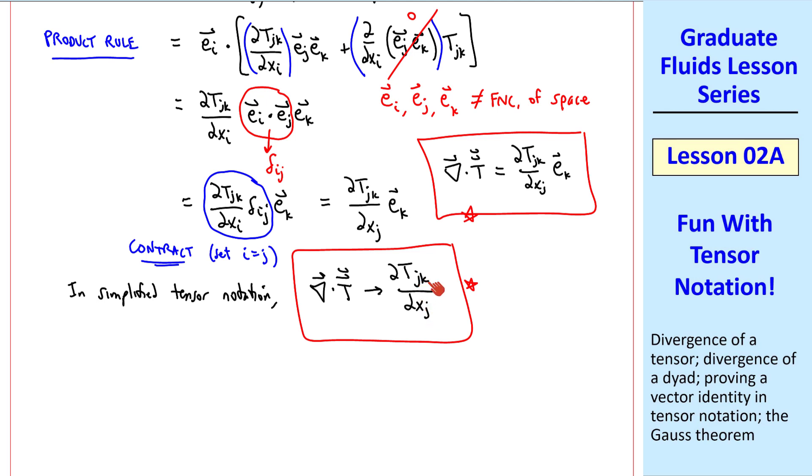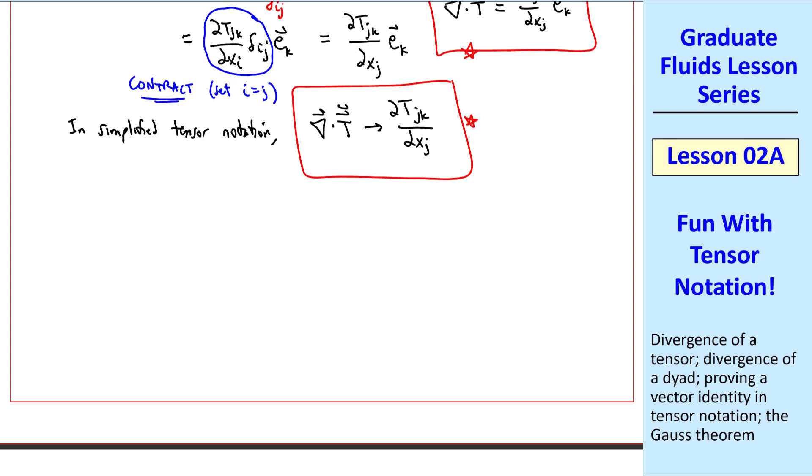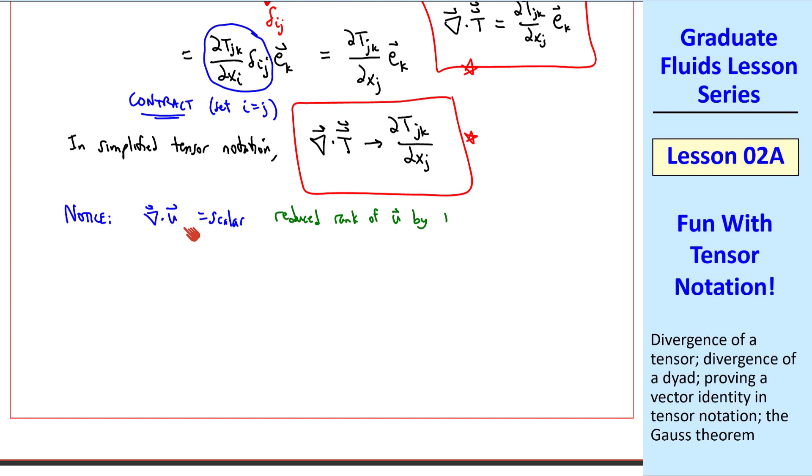Here, j is repeated, and k is a free index, implying that this is a vector. As you get more used to tensor notation, you'll recognize this del del xj as the del operator, and tjk as a second-order tensor, and the summation over j as a dot product. Notice that del dot u became a scalar. We reduce the rank of this vector u by 1, making it a scalar. Similarly, the divergence of this second-order tensor is a vector, and we reduce the rank of t by 1. You can keep going to any order tensor, so the divergence of a tensor always reduces the rank by 1.